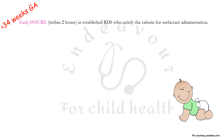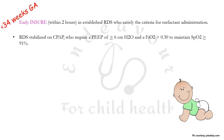For babies less than 34 weeks but beyond 28 weeks gestational age, early INSURE — that is, intubate, surfactant, and extubate within two hours — is recommended in established respiratory distress syndrome satisfying the criteria for surfactant administration, specifically within two hours of birth. Surfactant may also be needed in RDS stabilized on CPAP but with requirements of PEEP ≥6 cm H₂O and FiO₂ >0.3 to maintain SpO₂ ≥91%. LISA — less invasive surfactant administration — should be preferred over INSURE for administration of surfactant.